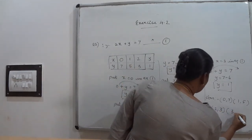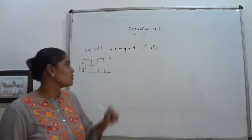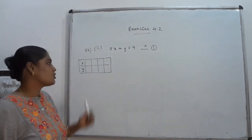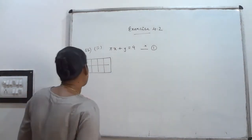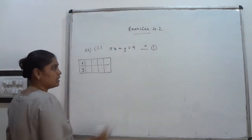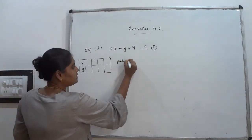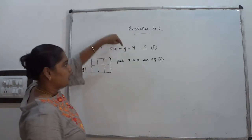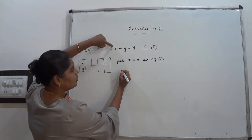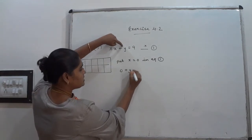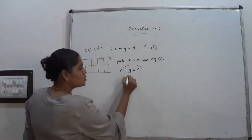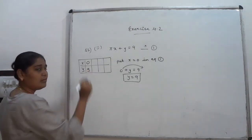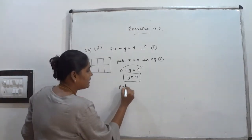Question 2, second part: πx + y = 9. You have to find 4 solutions. I mark this as equation number 1. Put x = 0 in equation number 1: π × 0 = 0, so 0 + y = 9, giving y = 9. When x = 0, y = 9.